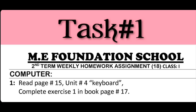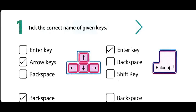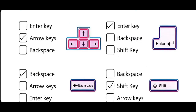Tax No.1: Read Page 15, Unit 4 Keyboard. Pyare bachyon, hum Page 15 read kar chuke hain, translation bhi kar chuke hain. Complete Exercise 1 in Book Page 17. Exercise 1: Tick the correct name of given keys. Hume di gayi keys ke sahi naam par nishaan lagaana hai. Pehli key ka jawab Arrow keys hai — Arrow keys ke saamne box mein tick karenge. Doosri key ka jawab Enter key hai — Enter key ke saamne box mein tick karenge.